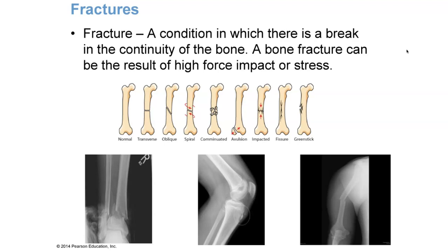A comminuted fracture is like a puzzle piece for an orthopedic surgeon to fix. An avulsion fracture is where part of the bone is pulled away from the rest. An impacted fracture is caused by a large amount of force — from an accident or jumping from a large height and landing. A fissure fracture is not very common.